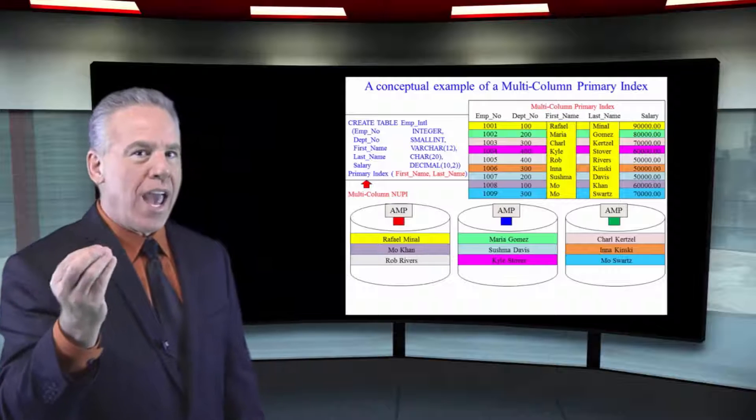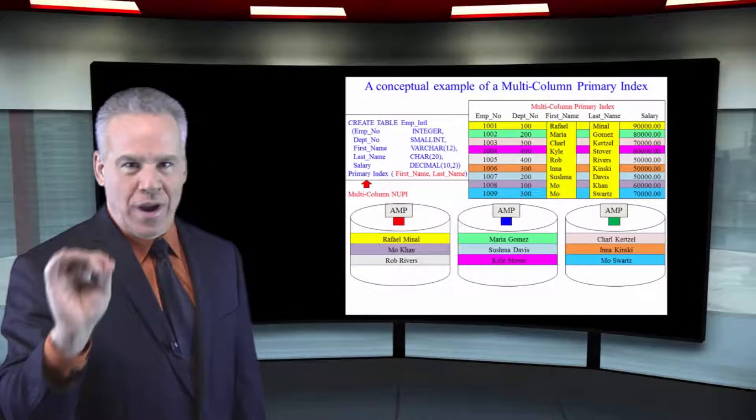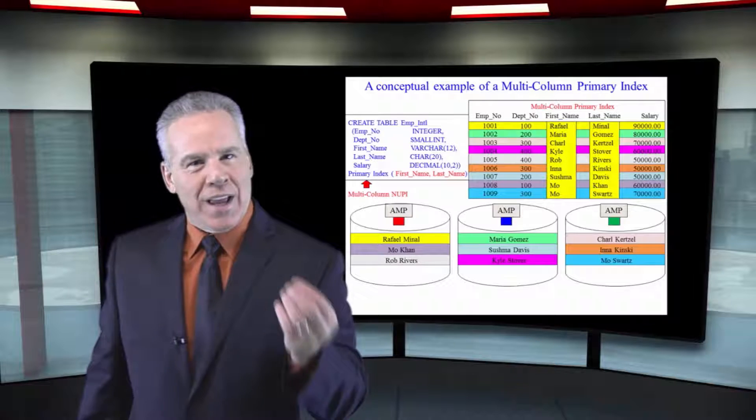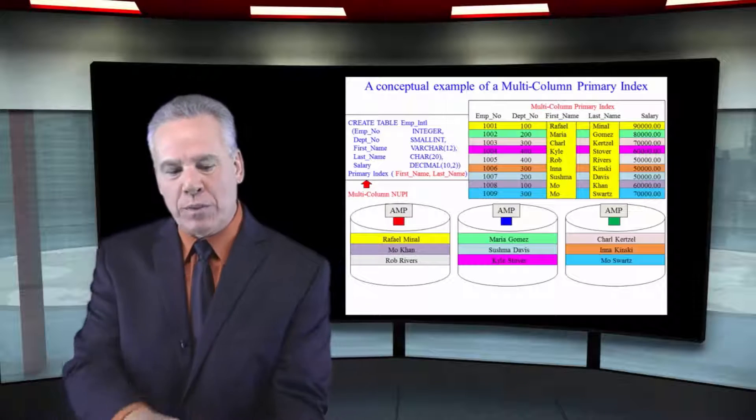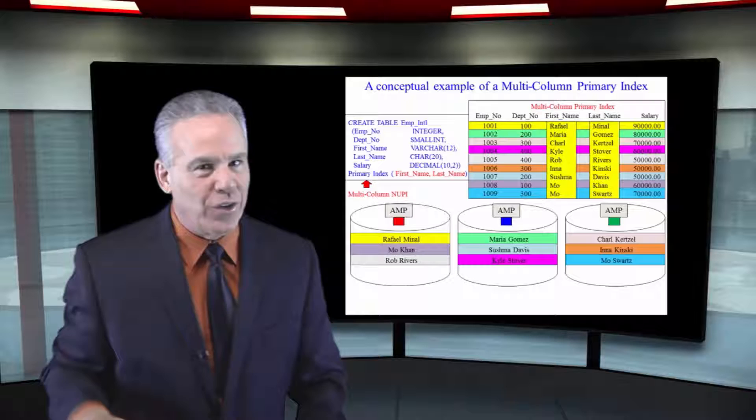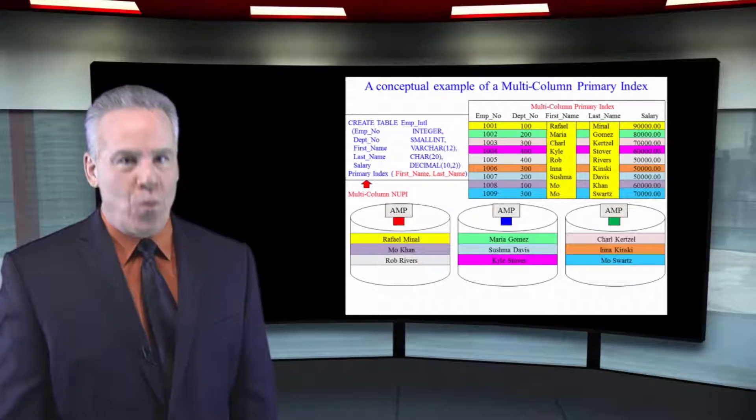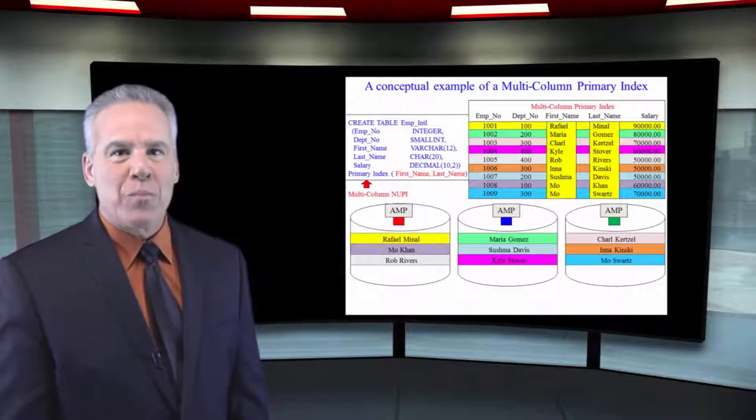So that's why you'll have a multi-column primary index for better distribution, or because sometimes people use their queries and they always put in one, two, or three fields all the time. Then that's an excellent case for one multi-column primary index.